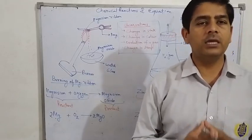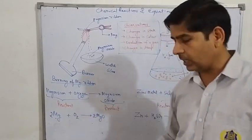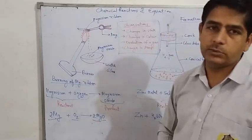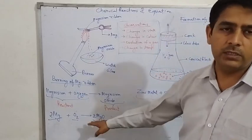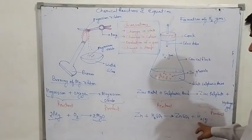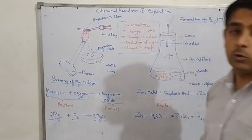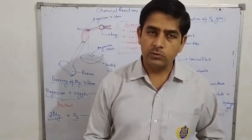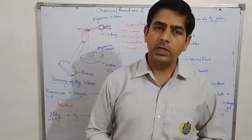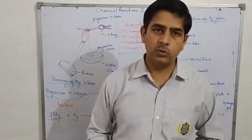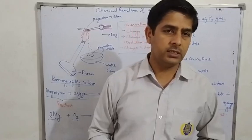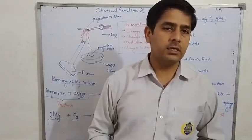When the number of atoms of the same element is equal on both sides of a chemical equation, we call it a balanced chemical equation. For example, in the magnesium reaction, there are two magnesium atoms and two oxygen atoms on both sides — so the number of atoms is the same, and that is why it is a balanced chemical equation. Similarly, in the zinc and sulfuric acid reaction, the number of atoms of each element on both sides is equal, so that reaction is also a balanced chemical equation.